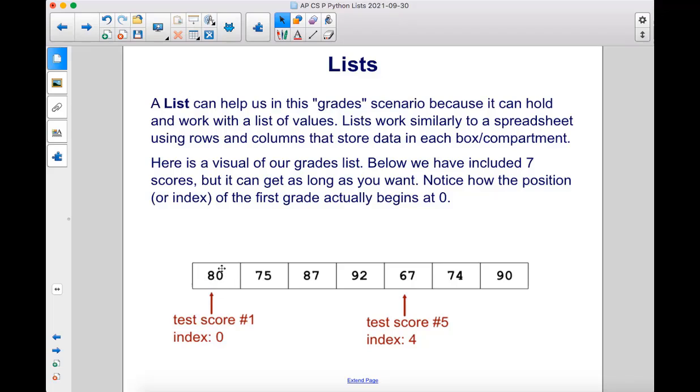So, for the first test score, the index value is zero. For the fifth test score, the index value is four.